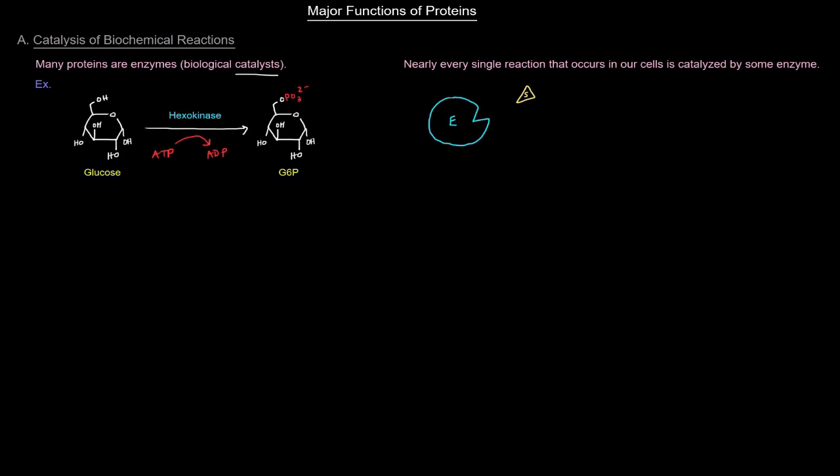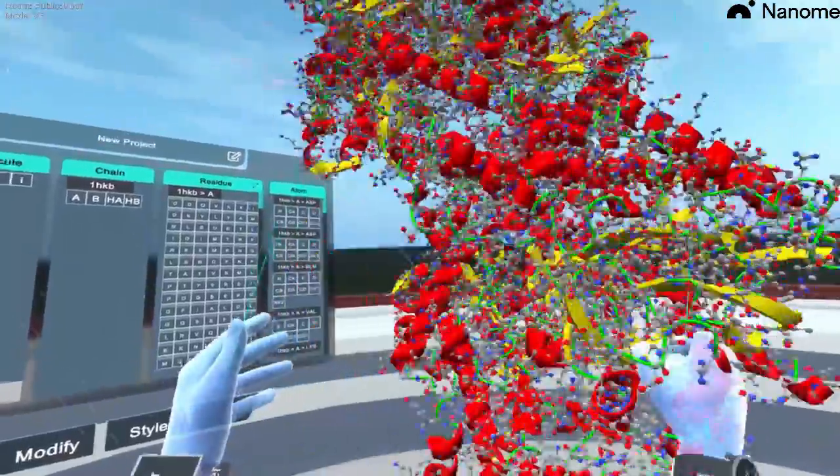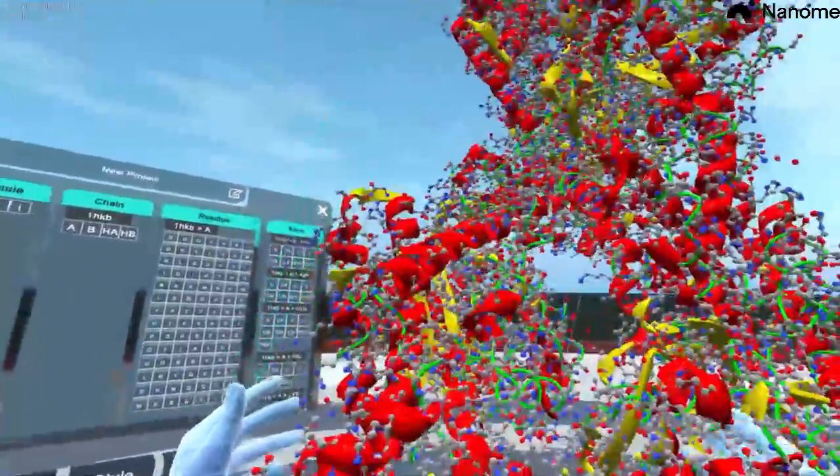An example: here we have a reaction converting glucose into glucose 6-phosphate. This is the first reaction of glycolysis. This hexokinase is the enzyme that catalyzes that reaction, and hexokinase is a protein. So here is that actual hexokinase protein. This is what actually goes through and catalyzes the conversion of glucose to glucose 6-phosphate.